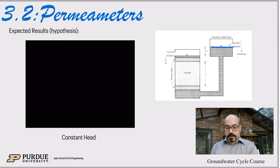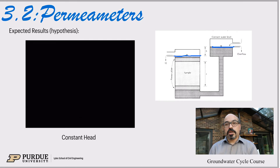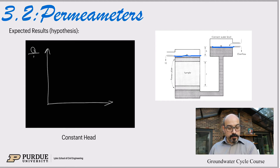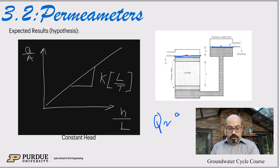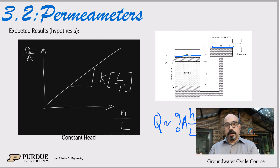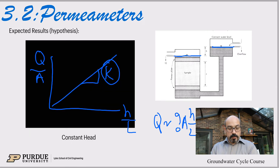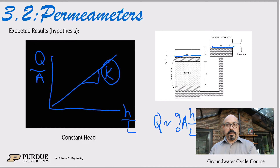For the constant head permeameter, the head is maintained and open to the atmosphere. What is the relationship between discharge and those parameters? If we assume a linear relationship, we can see that hydraulic conductivity K is the slope of Q/A versus H/L. Remember that relationship: Q proportional to the unknown times H/L times A. So if we do Q over A and assume a linear relationship, we can plot Q/A versus H/L, and the slope gives us the hydraulic conductivity — that length per time, similar to a velocity dimension.